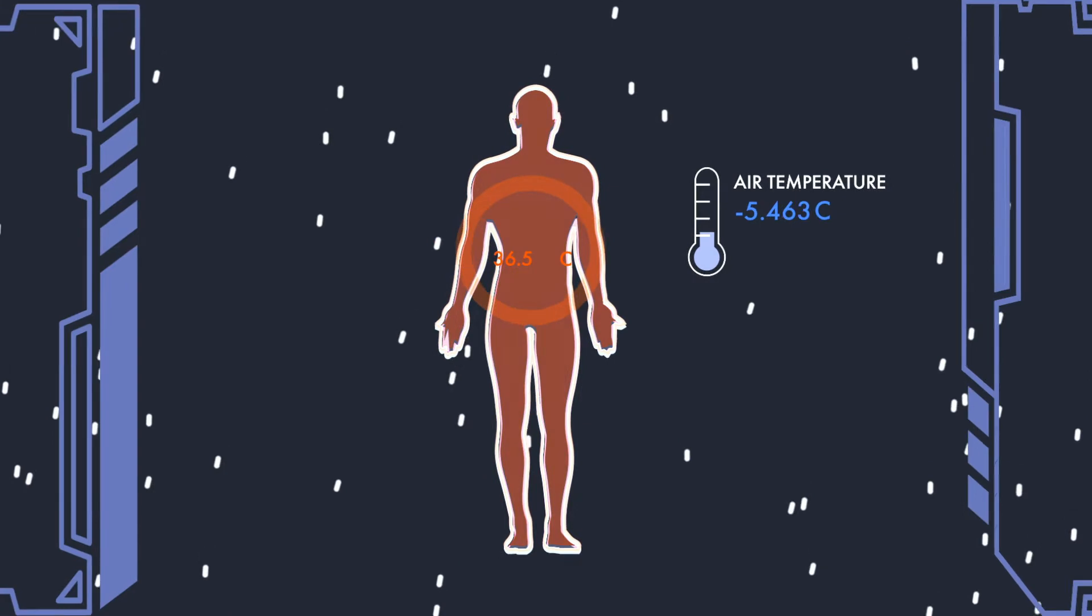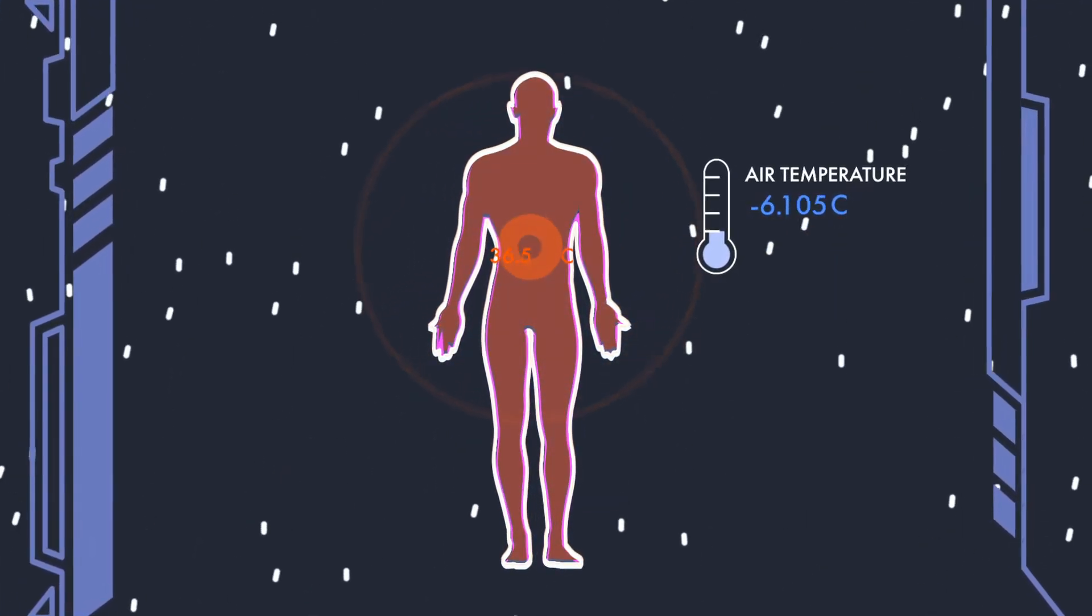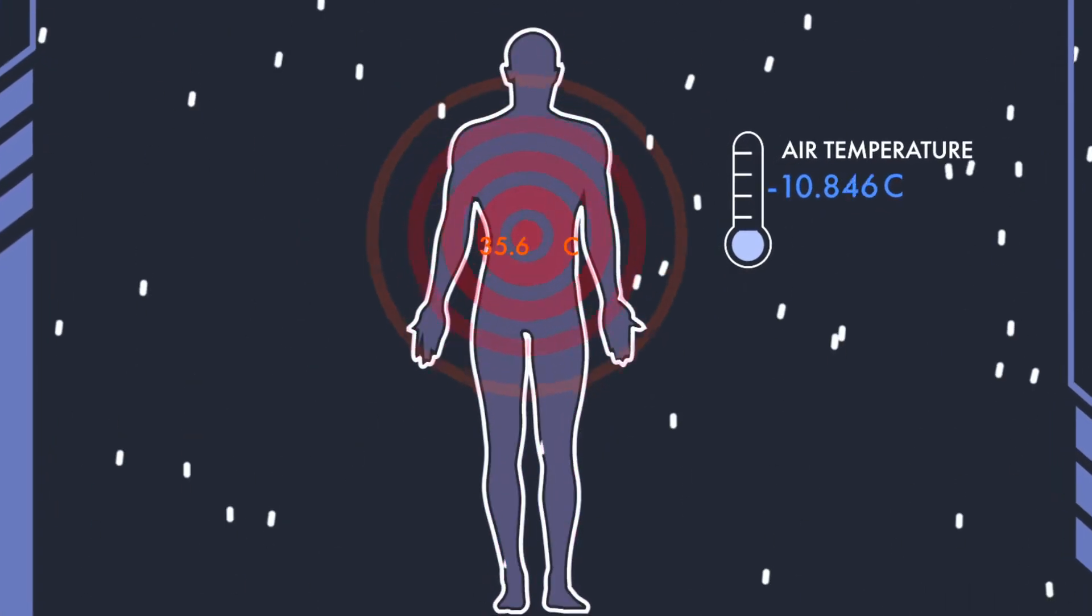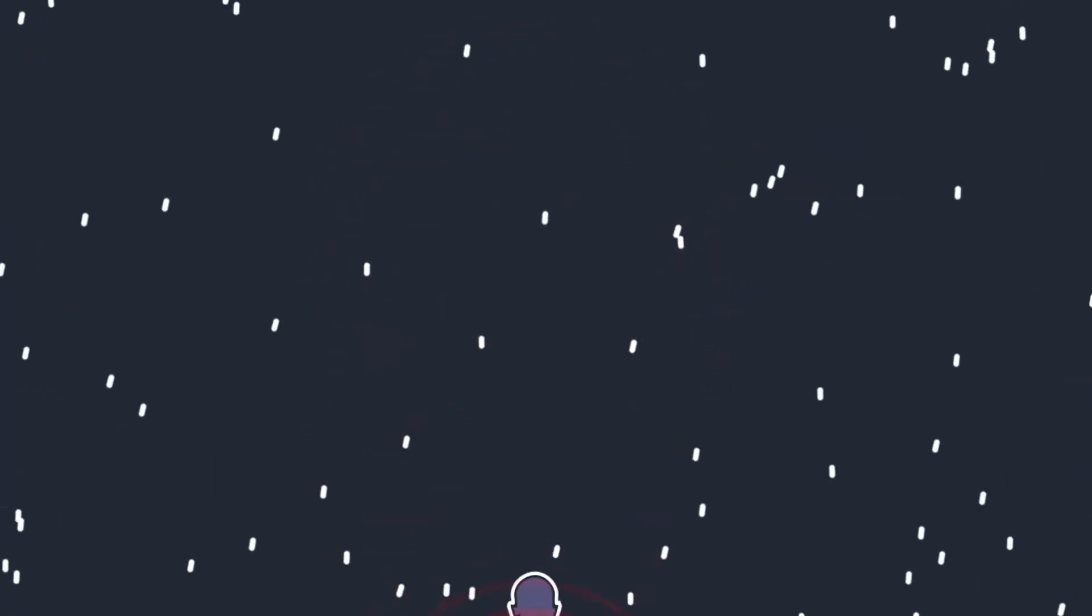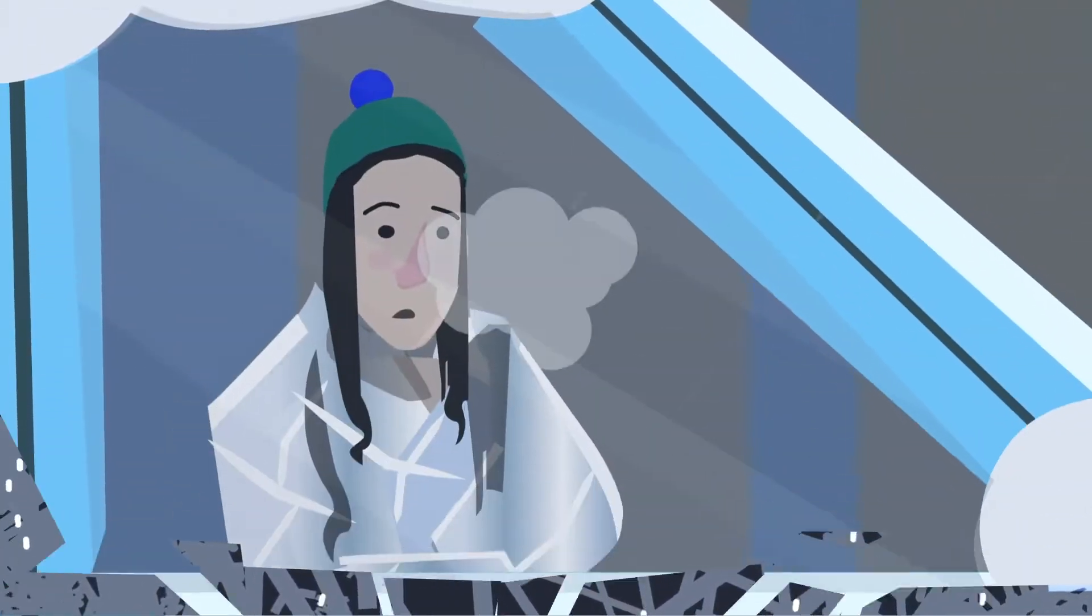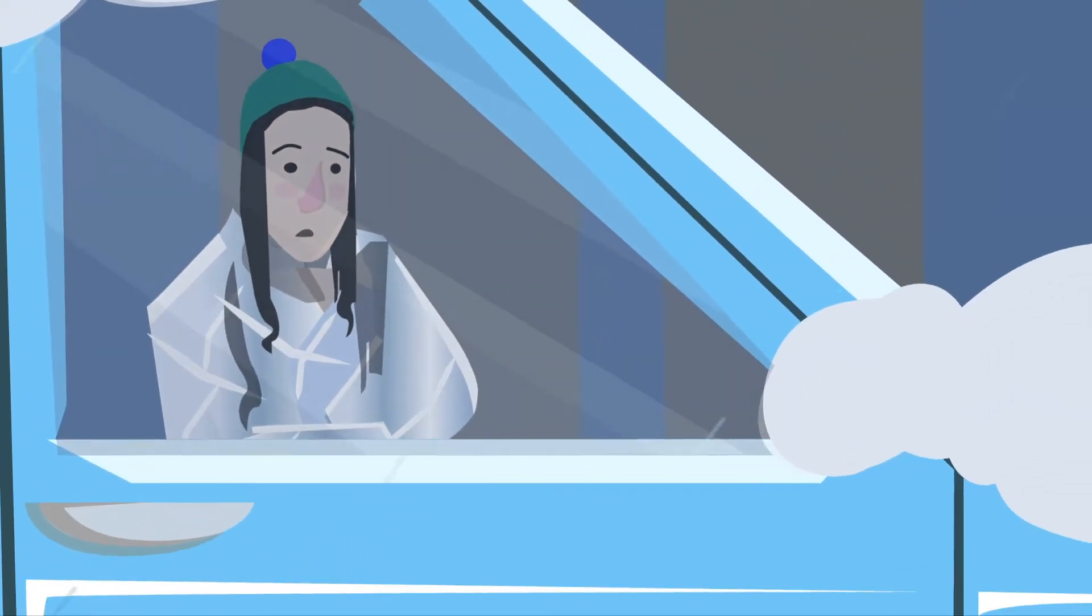Our bodies require a certain internal core temperature to maintain proper function of our vital organs. When our bodies lose too much heat, it results in a condition known as hypothermia. Hypothermia can set in within hours, if not minutes.